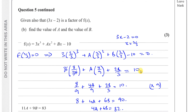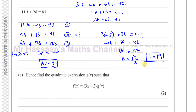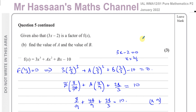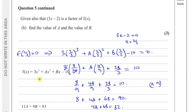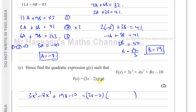Part c says: hence, find the quadratic equation g(x) such that f(x) equals (3x minus 2) times g(x). Our function is now f(x) equals 3x cubed minus 8x squared plus 19x minus 10. Since g(x) must be quadratic for the product with a linear factor to give a cubic, we write g(x) as ax squared plus bx plus c. This can be solved by algebraic long division or by comparing coefficients.